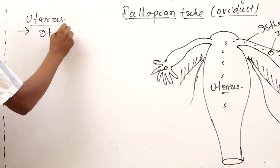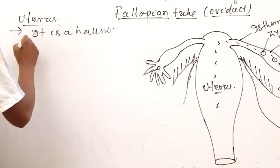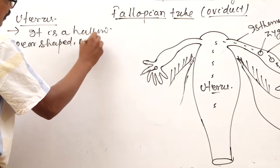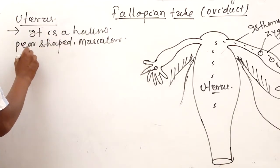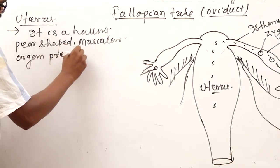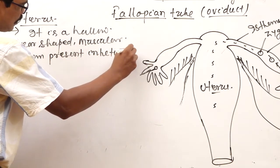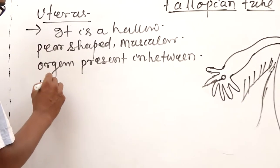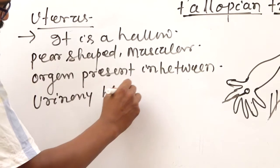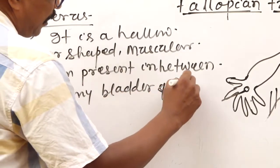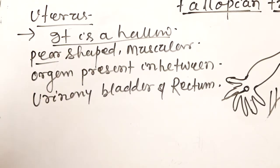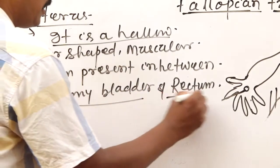The uterus is a hollow, pear-shaped muscular organ present in between the urinary bladder and rectum.